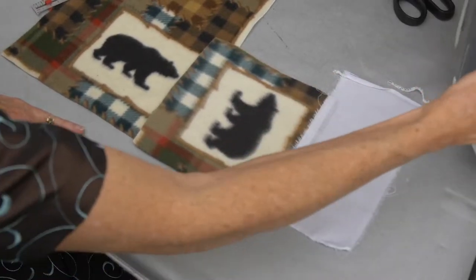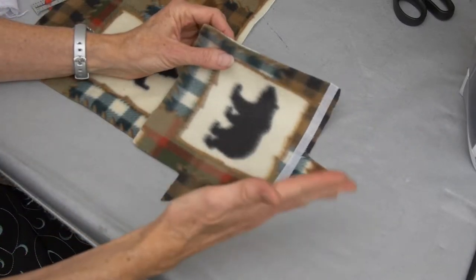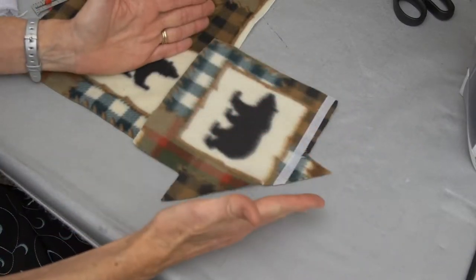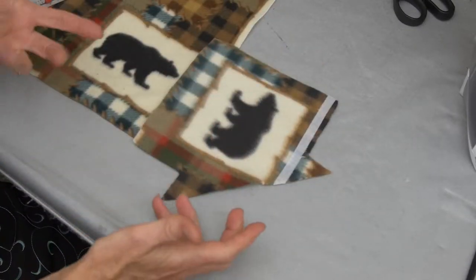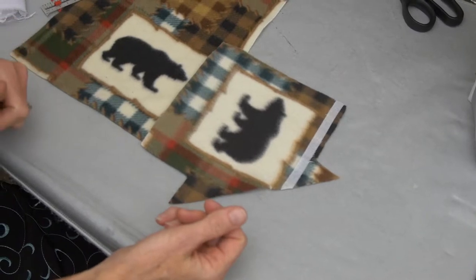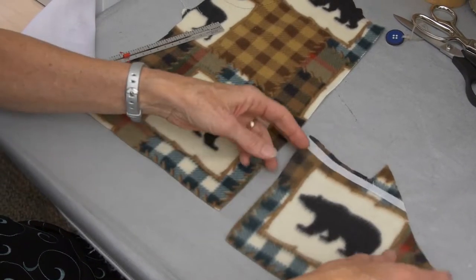Part of the insulated value of fleece is the fact that there are air pockets in there. If you press it, the polyester will fuse to itself and those air pockets will be pressed out, and you will lose some of the insulated value of your fabric.